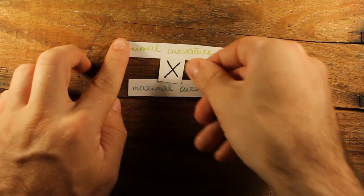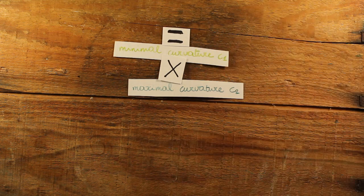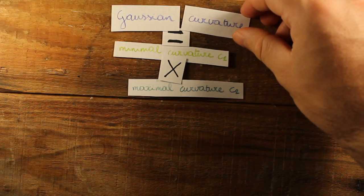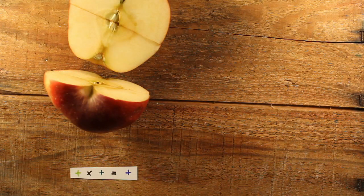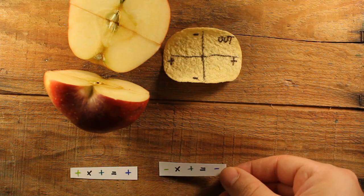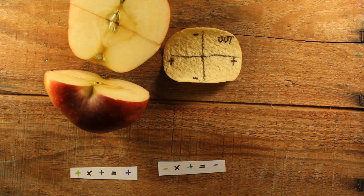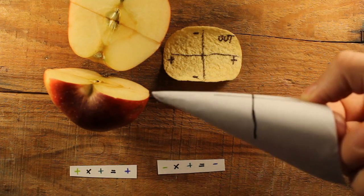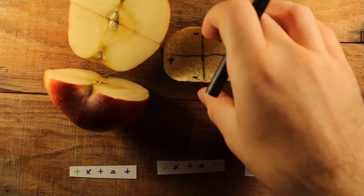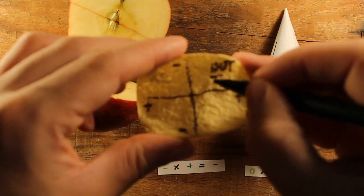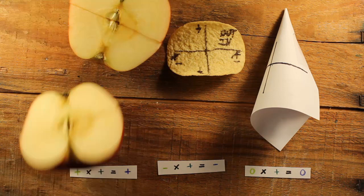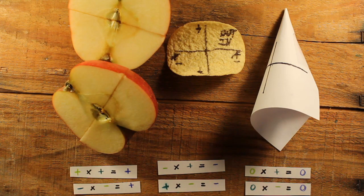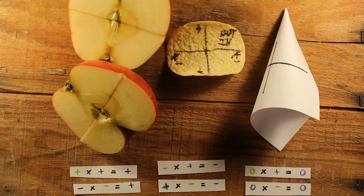The insight that led Gauss to his theorem was to multiply the principal curvatures. So their product is known as the Gaussian curvature of a surface. In case of the apple, both principal curvatures are positive. So the Gaussian curvature is positive as well. In the case of the chip, we got one positive and one negative curvature. So multiplying them gives a negative Gaussian curvature. And the cone has zero Gaussian curvature, because the minimal curvature is zero. One of the neat things about Gaussian curvature is that it doesn't matter what you call the inside of a surface, because changing inside and outside changes the signs of the principal curvatures, but the product remains the same. So the Gaussian curvature is positive if both principal curvatures are in the same direction, negative if they are opposite, and zero as soon as one of them is zero.